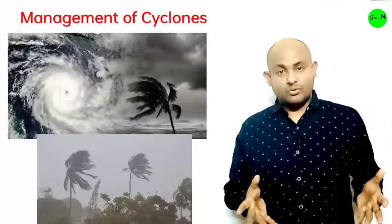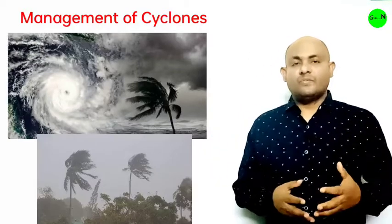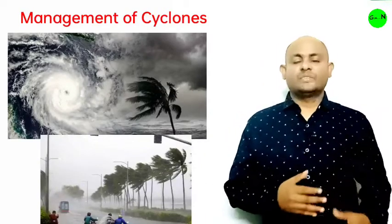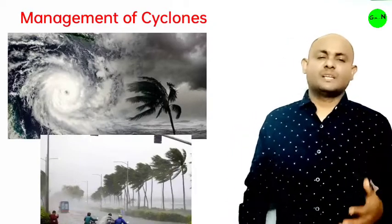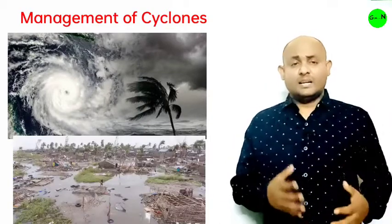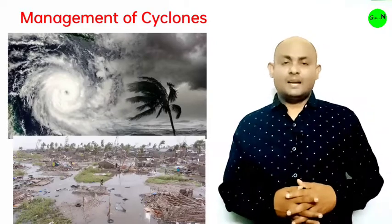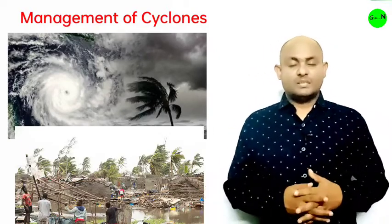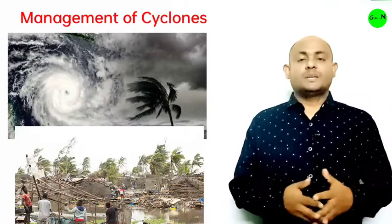There are many structural and non-structural measures for effective cyclone disaster management. Structural measures include construction of cyclone shelters, cyclone-resistant buildings, road links, culverts, bridges, canals, drains, embankments, surface water tanks, and communication and power transport networks. Non-structural measures include early warning systems, coastal zone management, awareness generation, disaster risk management, and capacity building of all stakeholders. These measures are being adopted under the National Cyclone Risk Mitigation Project implemented through World Bank assistance.